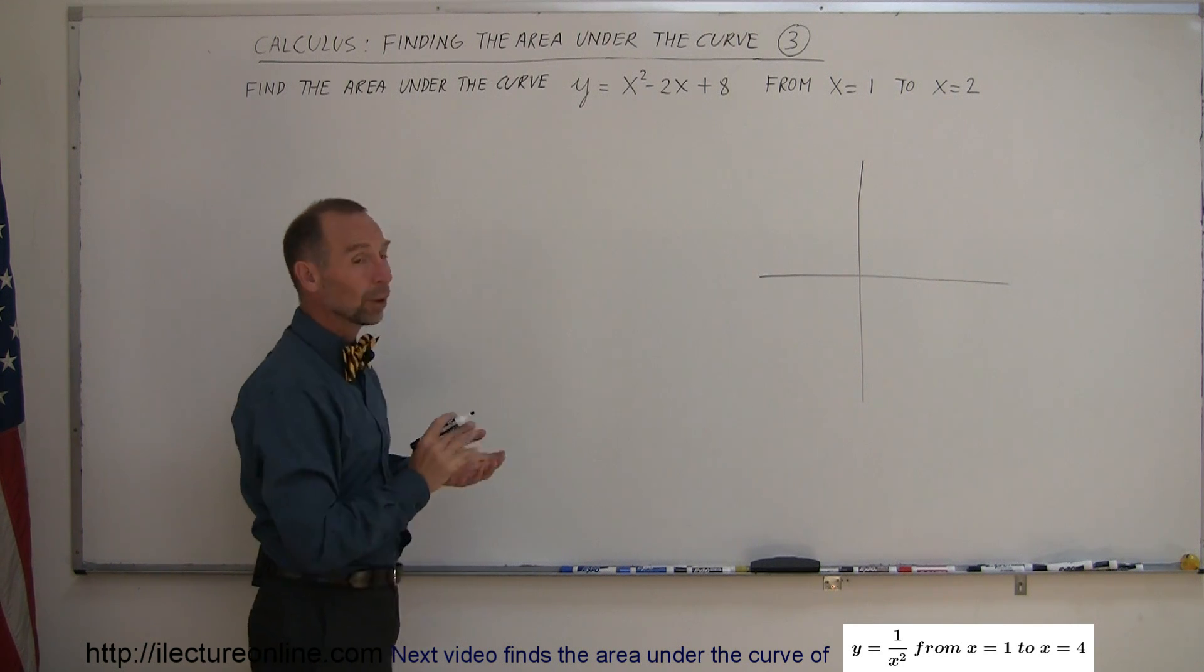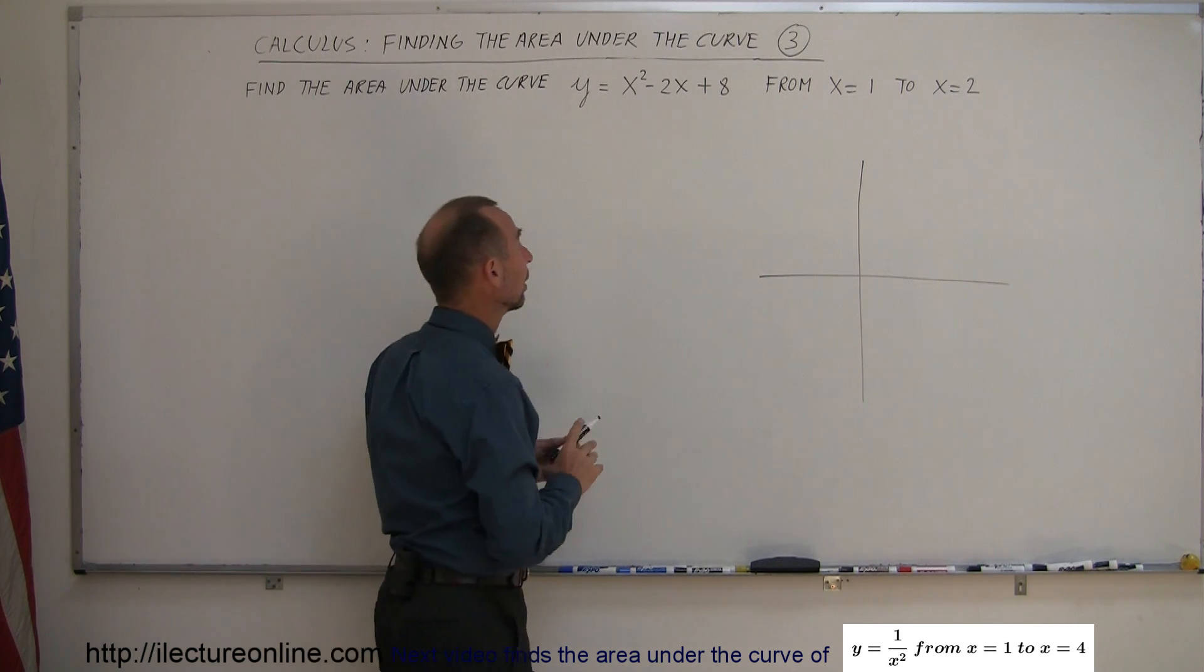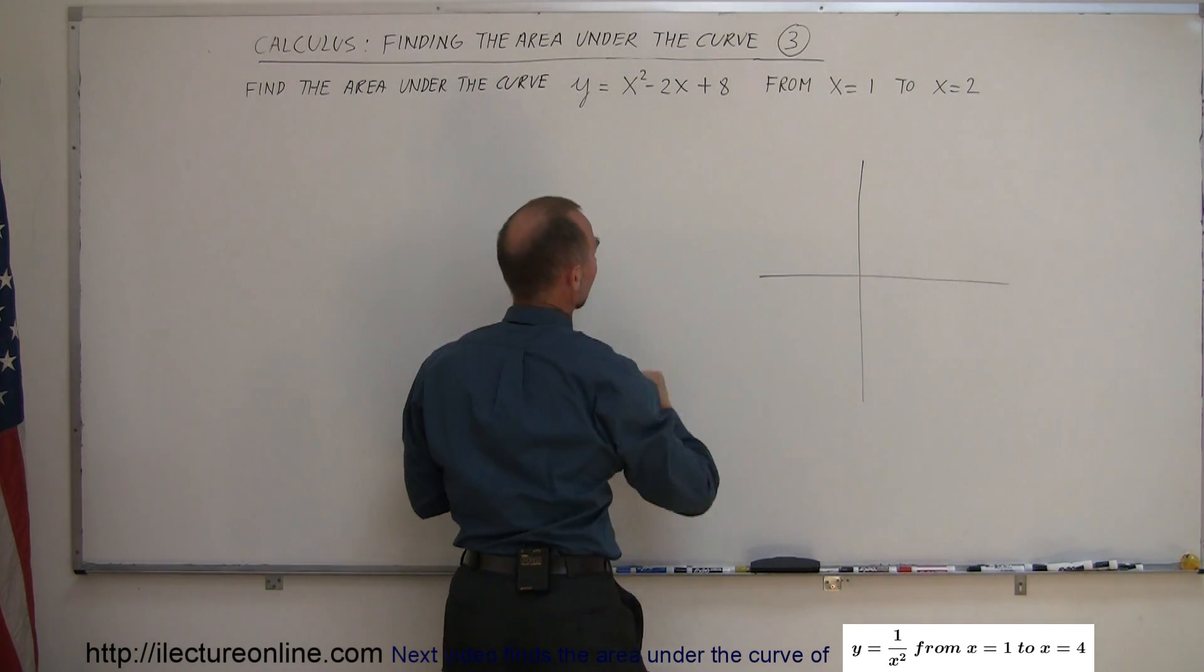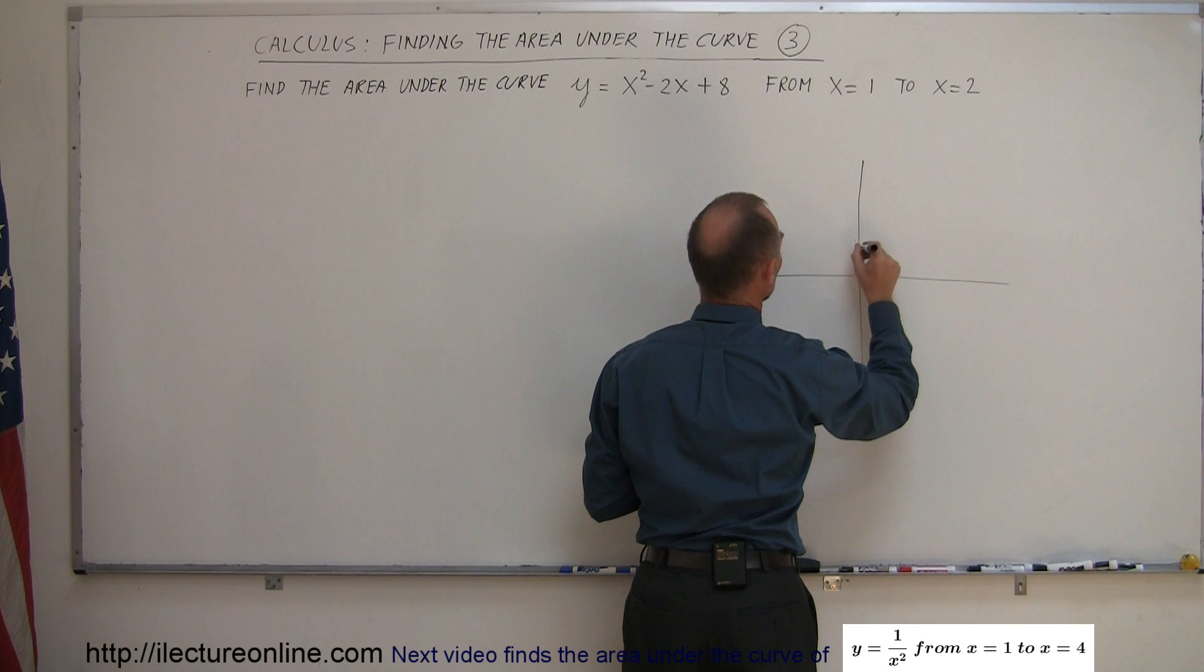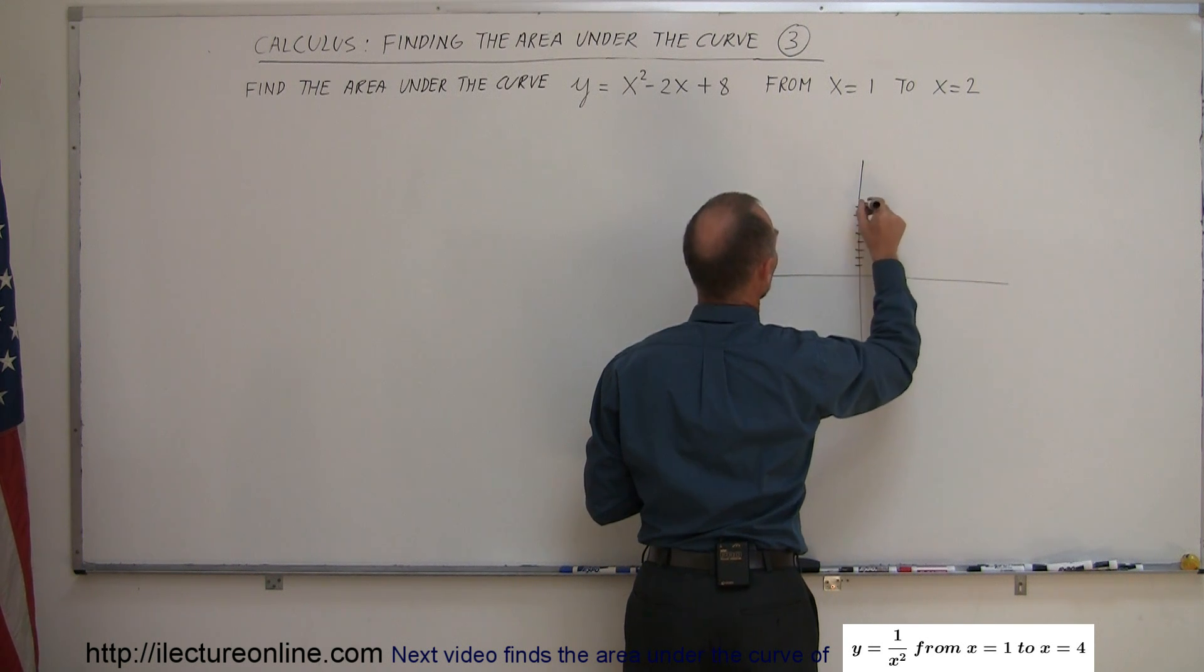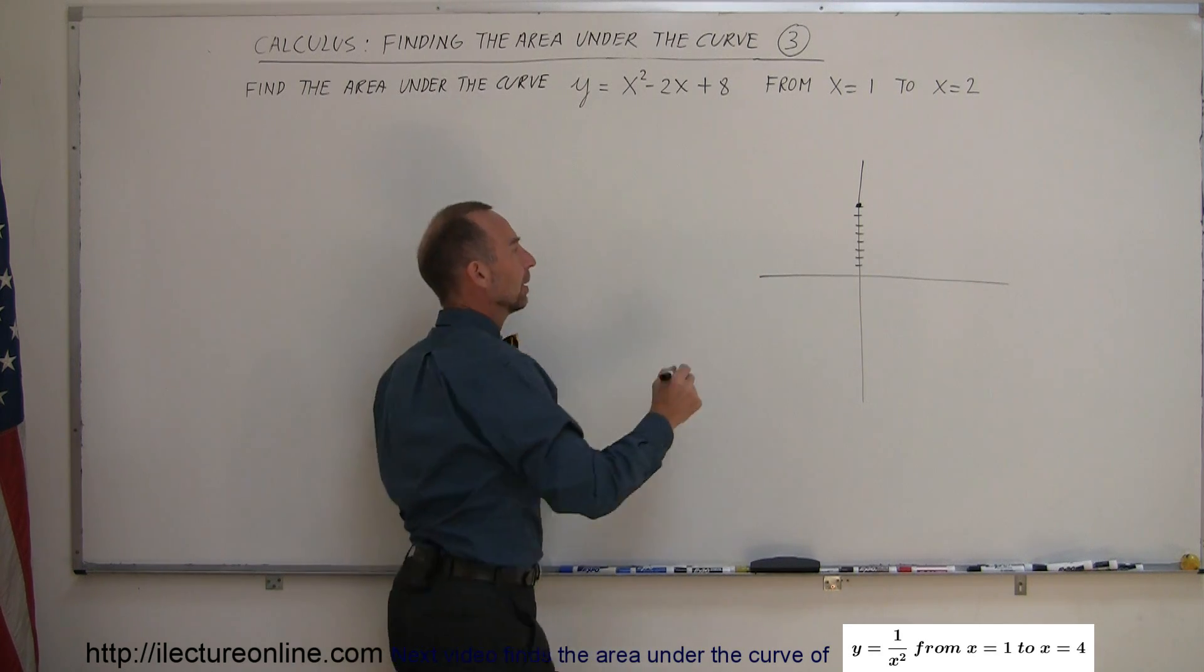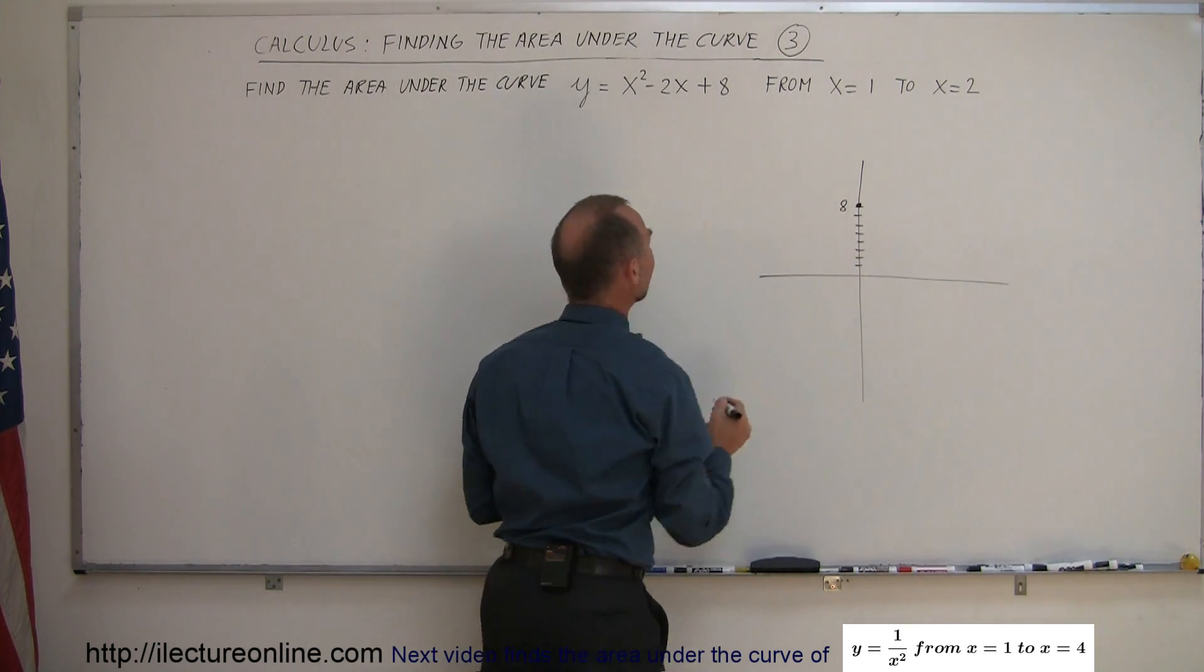One way to graph it is to look for some key points. If x equals 0, then y equals 8. So that helps us. Counting up 1, 2, 3, 4, 5, 6, 7, 8 on the y-axis, we can put a point right there. Now we know that the function passes through that point.